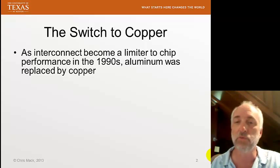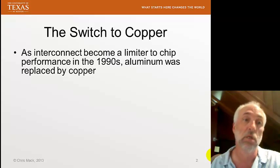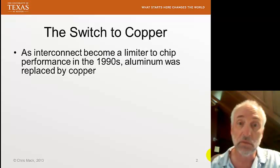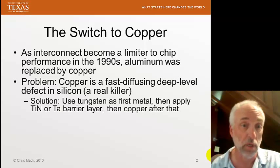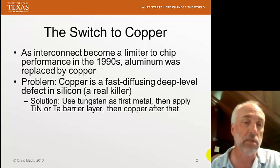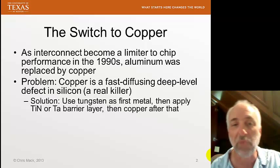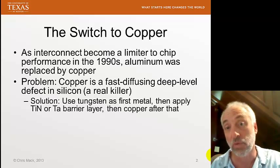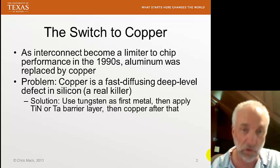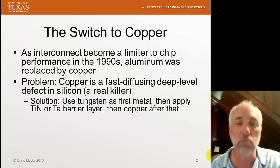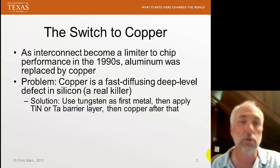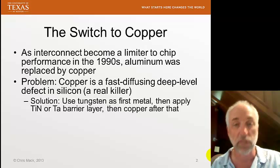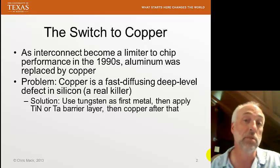It also has lower power consumption through those interconnects, but that's a smaller deal compared to the speed. But the switch was not an easy one, because there are some difficulties associated with using copper. In the first place, copper is a bad defect — it is called a deep-level defect in silicon. That is, it's a defect that lands right in the middle of the band gap and causes serious electrical problems with devices.